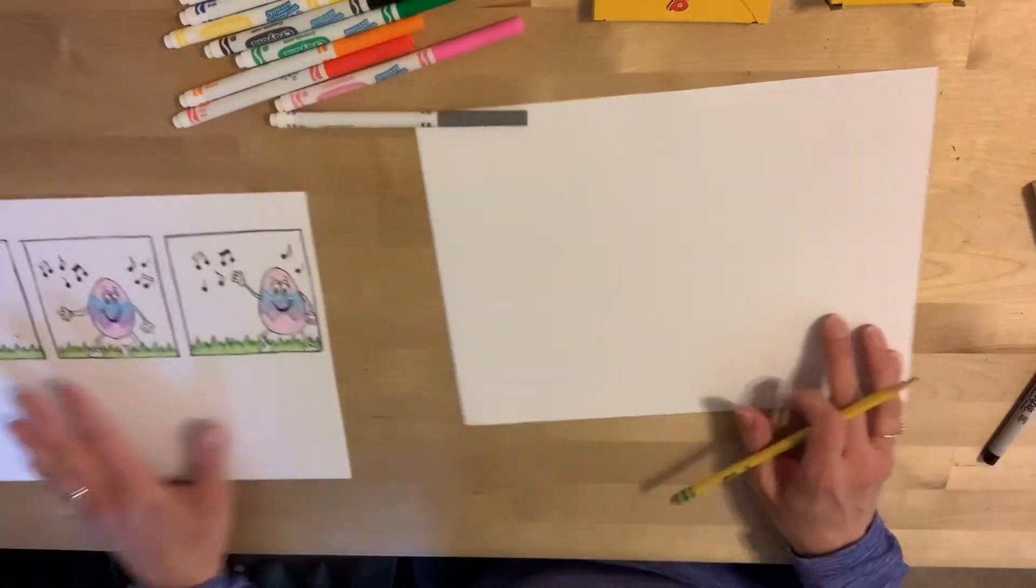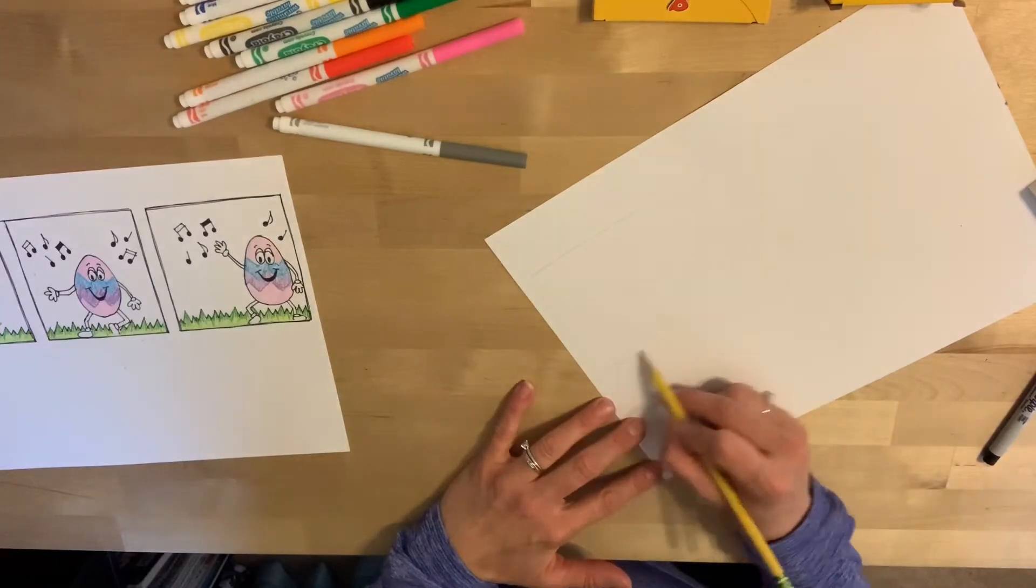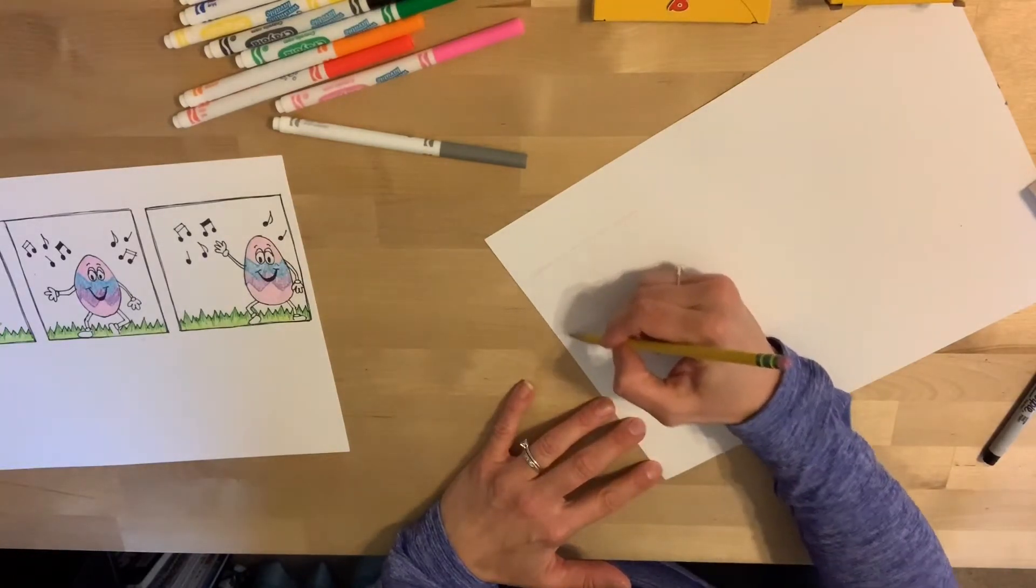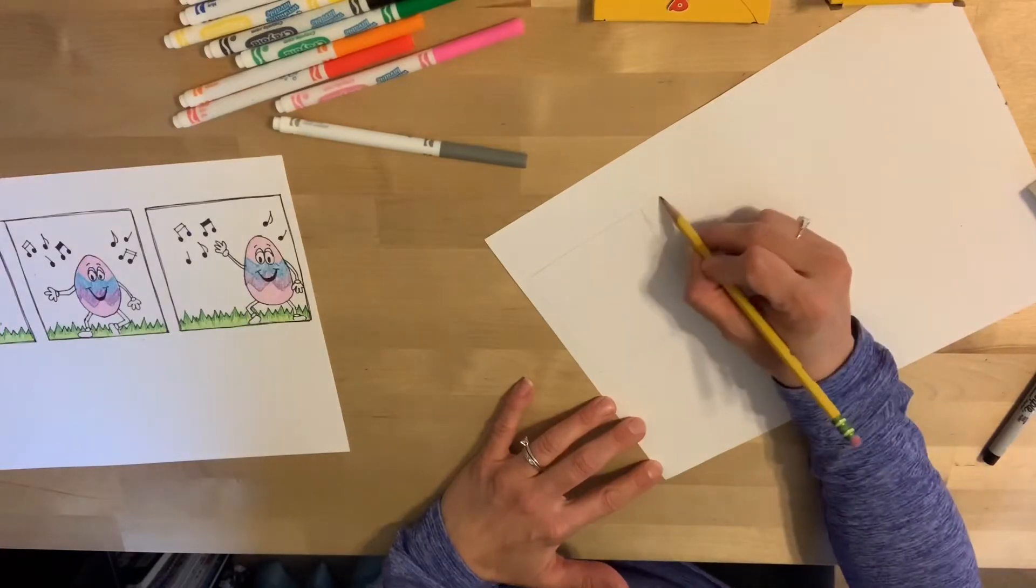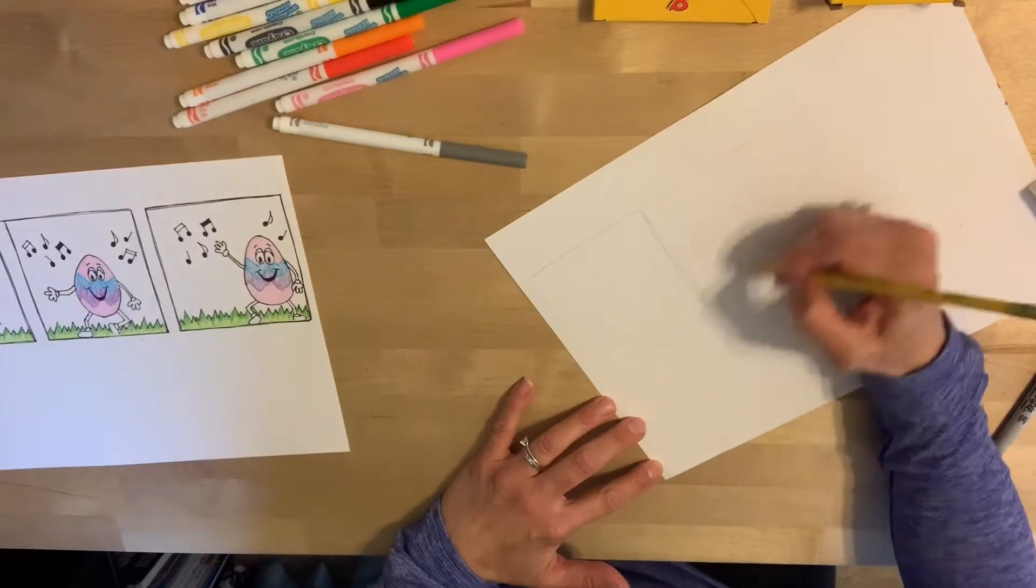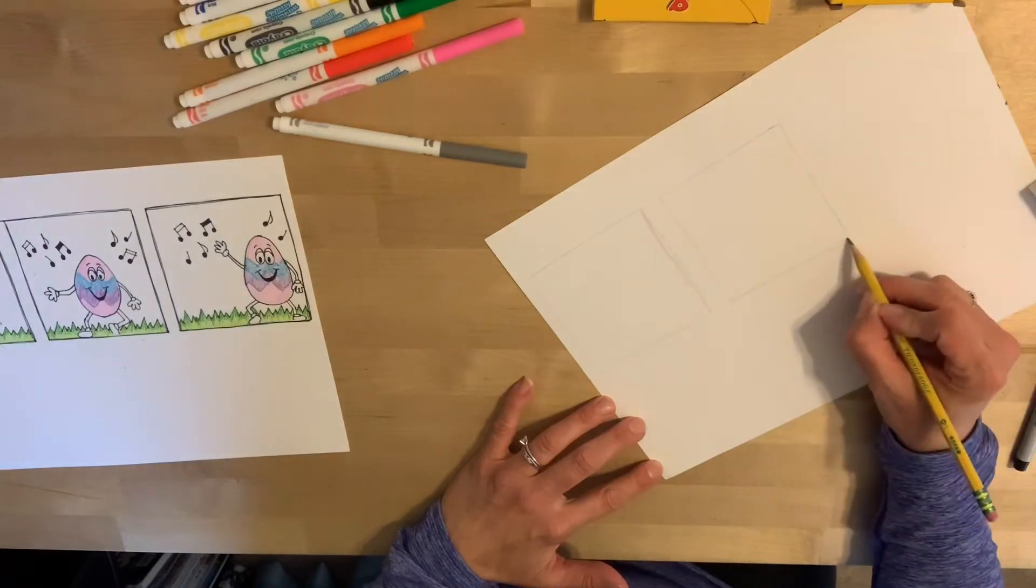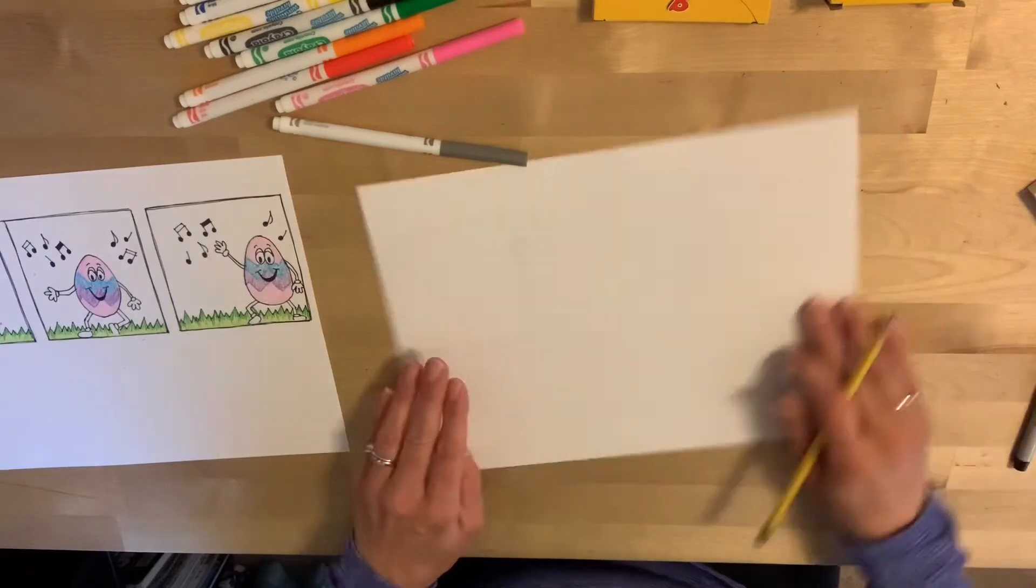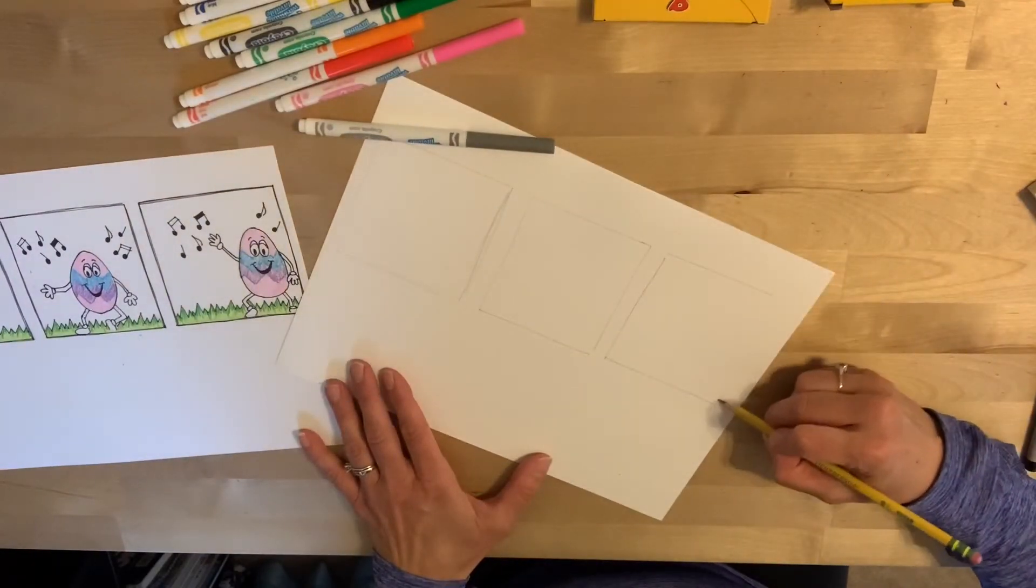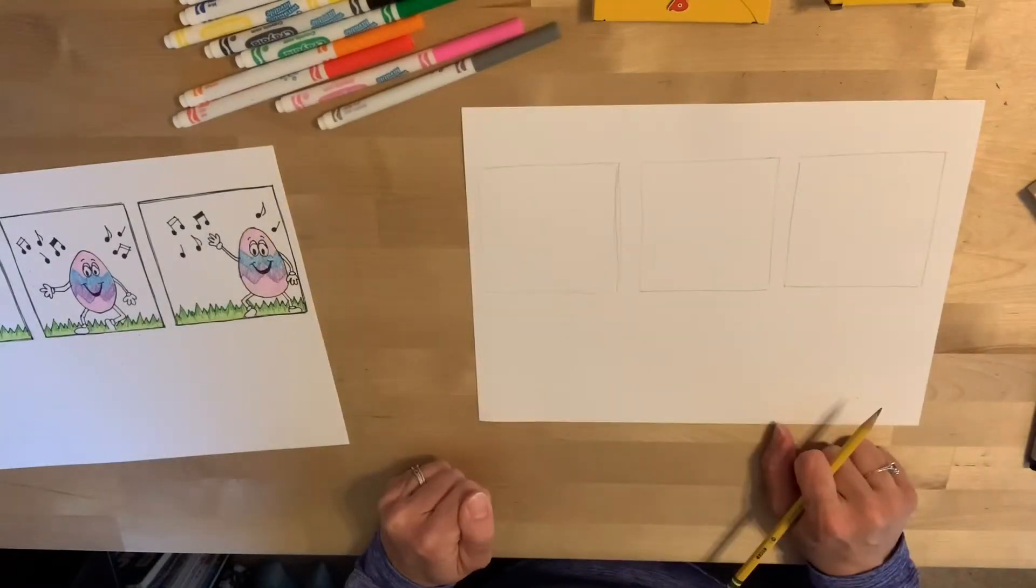So you want to start with the blocks first and I'm just going to quickly draw mine out. I have a little bit of practice drawing big squares. For you guys it's a little more difficult which is why I said to trace something. So there's my three squares.